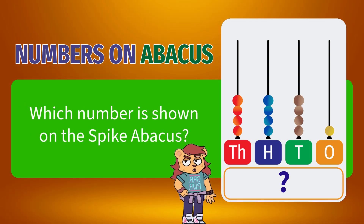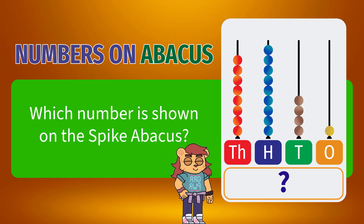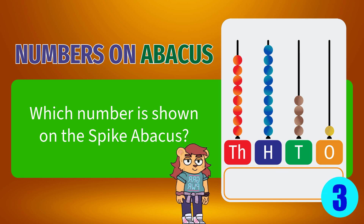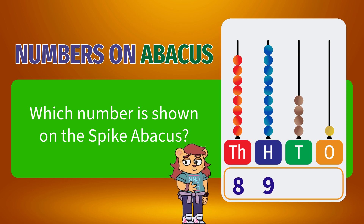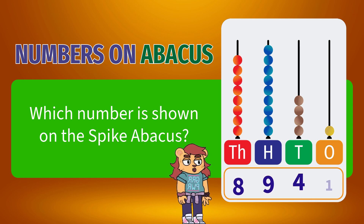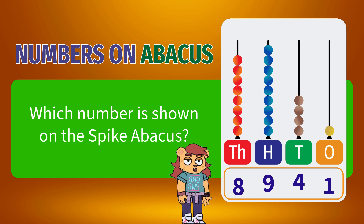What number is shown on the spike abacus? Eight thousandths, nine hundredths, four tens, one ones. The number is 8941.